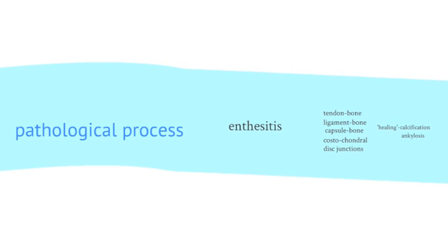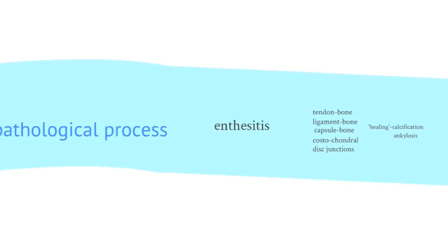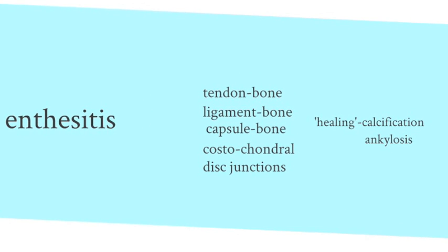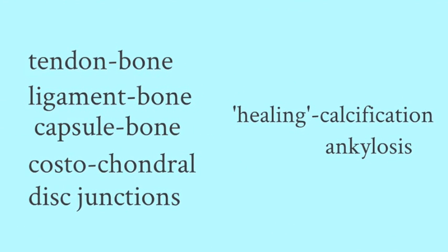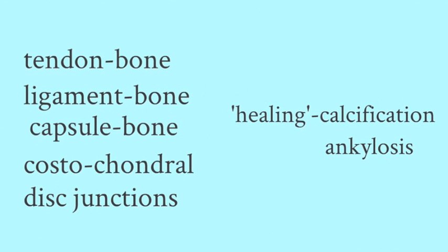The basic pathological process that occurs in ankylosing spondylitis is an enthesitis. The enthesis is junctional tissue that occurs between tendon and bone, ligament and bone, capsule and bone, at costochondral junctions, and disc junctions. Involvement of the enthesis results in healing, and healing is often accompanied by calcification which can be evident on plain x-rays. It also results in ankylosis or loss of movement of the involved spinal segments.